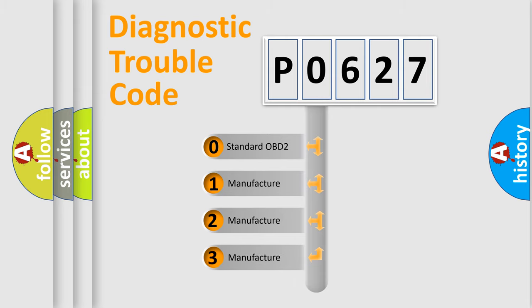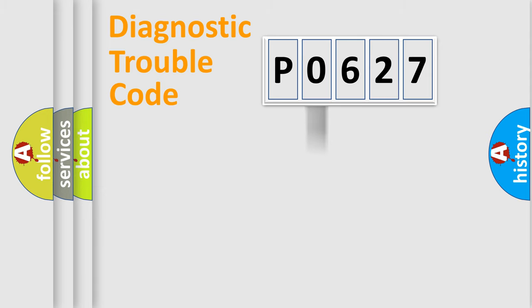If the second character is expressed as zero, it is a standardized error. In the case of numbers 1, 2, 3, it is a more prestigious expression of the car specific error.